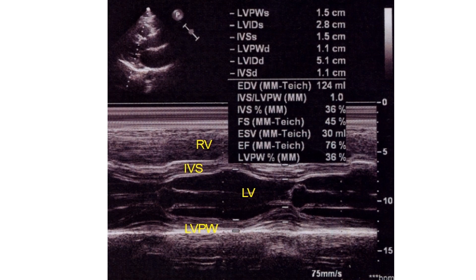From these measured values, other estimates are calculated by the computerised algorithm of the echocardiograph. EDV – end-diastolic volume. IVS by LVPW – ratio of the thickness of interventricular septum and left ventricular posterior wall in diastole. In asymmetric septal hypertrophy due to hypertrophic cardiomyopathy, this ratio is increased. It is reduced in septal thinning due to anterior wall myocardial infarction.